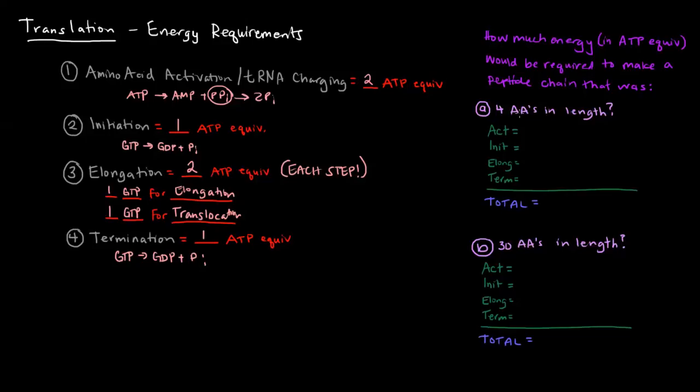Well, each one of these amino acids needs to be activated. So we have four of them times two ATP equivalents because each step will require two ATP equivalents. Initiation only needs to happen once, right? Once we've initiated, we're done. So we require one ATP equivalent for initiation.